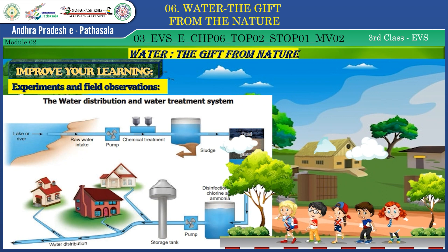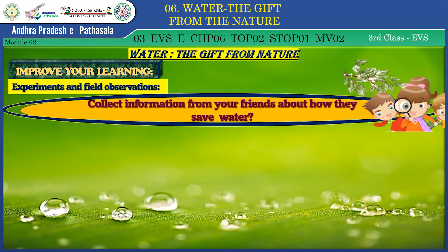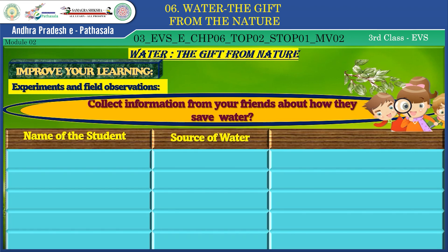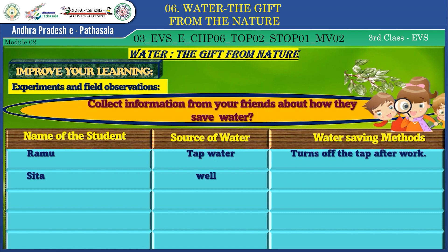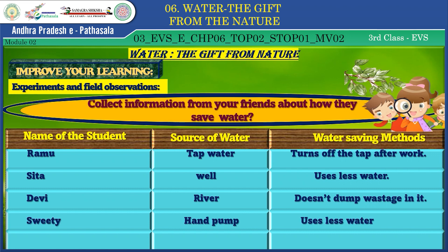I hope you understood very well. Now I am going to allot a project: collect information from your friends about how they save water and give a report in the table on screen — name of student, source of water, water-saving methods. For example: Ramu uses tap water and turns off the tap after work; Sita uses well water and uses less water; Devi uses river water and does not dump waste in it; Sweetie uses a hand pump and uses less water; Sharon uses borewell and turns off water after the tank is full.